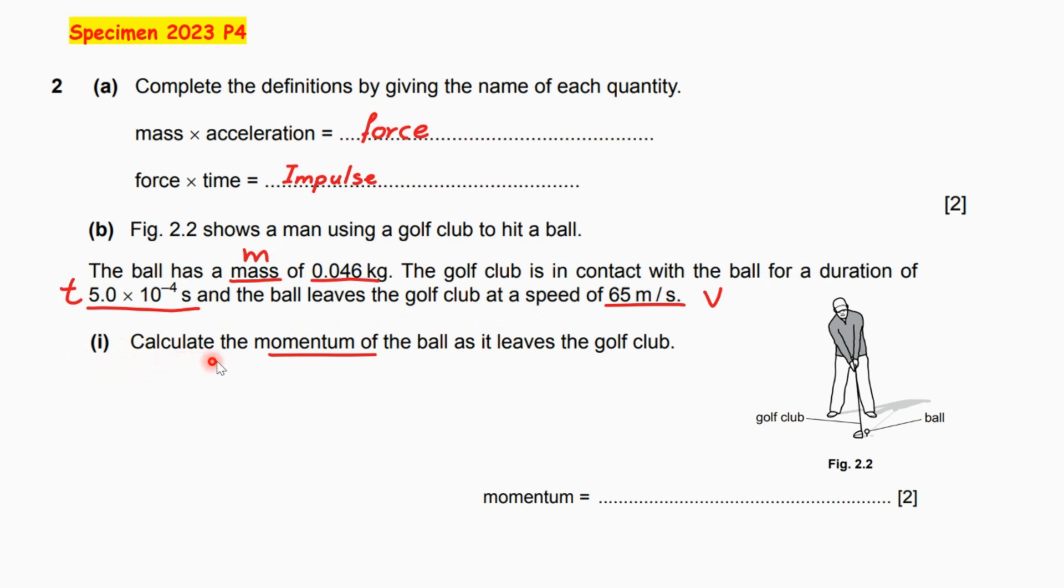Part i, calculate the momentum of the ball as it leaves the golf club. Momentum is equal to mass times velocity. The symbol of momentum is P and equals the mass symboled by M times V, which is velocity.